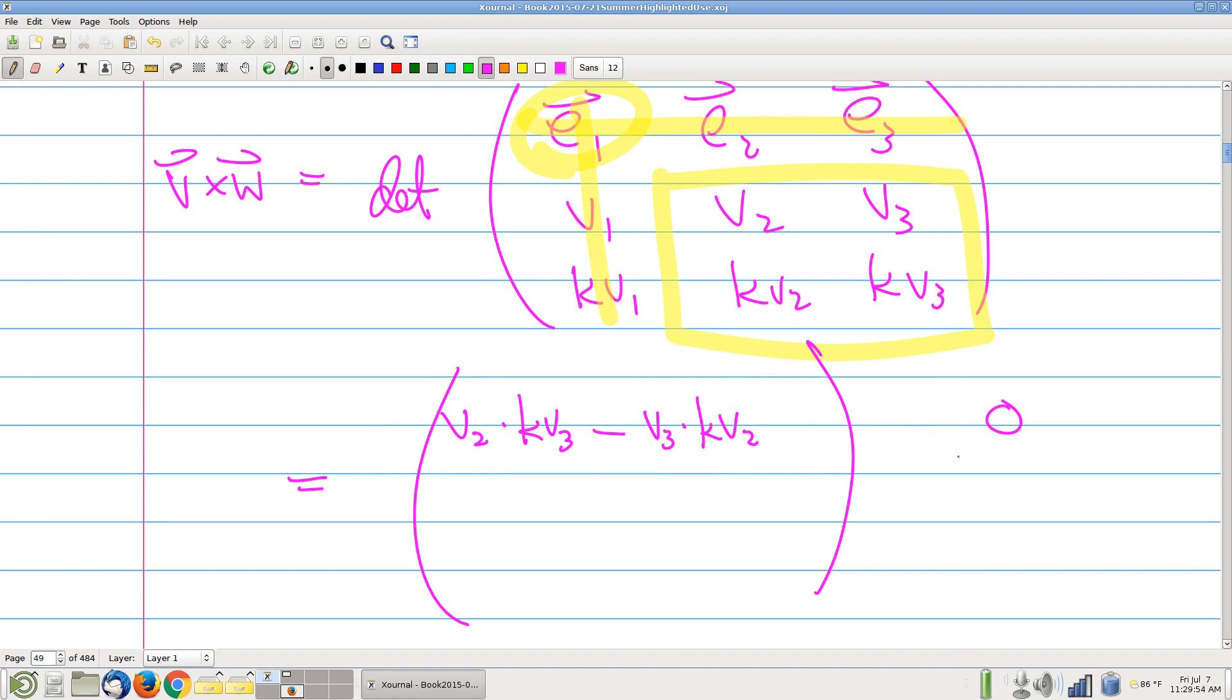Okay, so let's look at the second coordinate. What's left over are these numbers, and we again take the little 2x2 determinant, and we get V1 times KV3 minus V3 times KV1. That's 0 again.